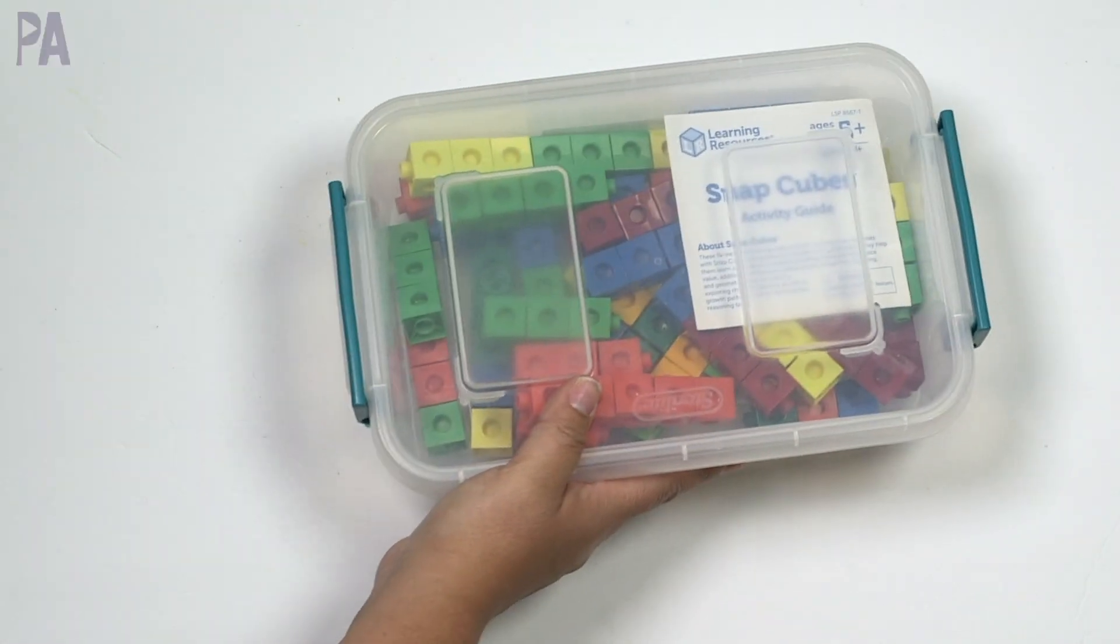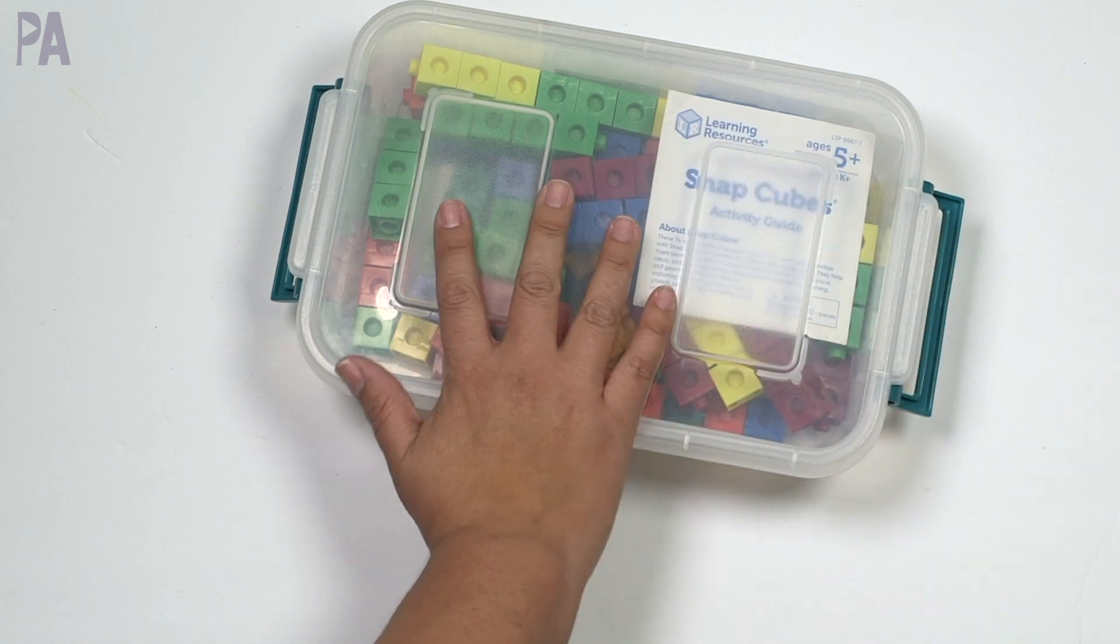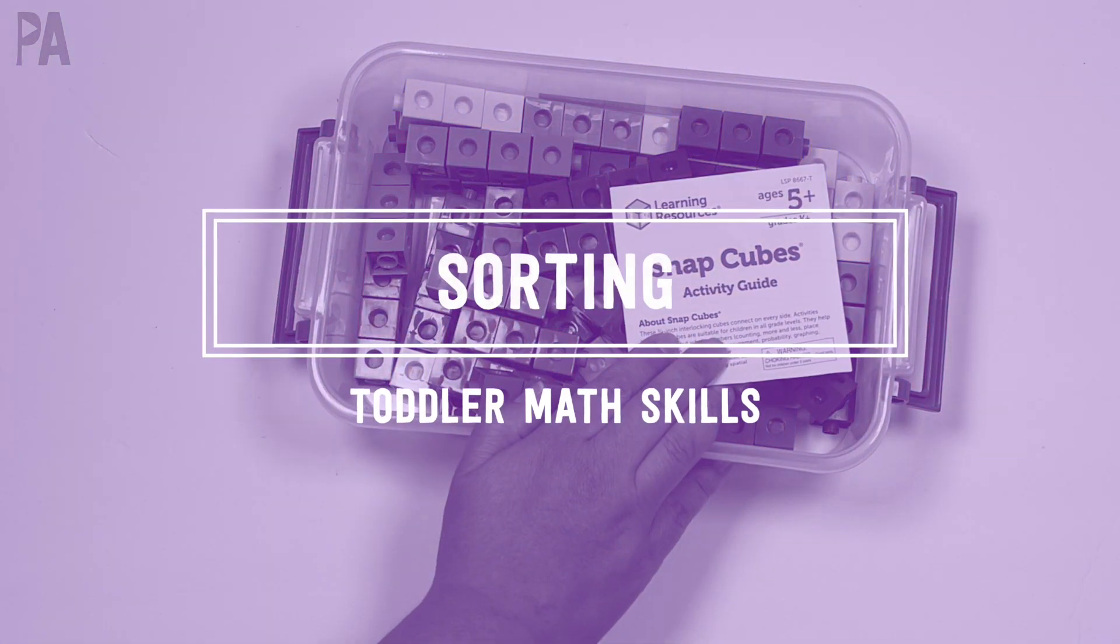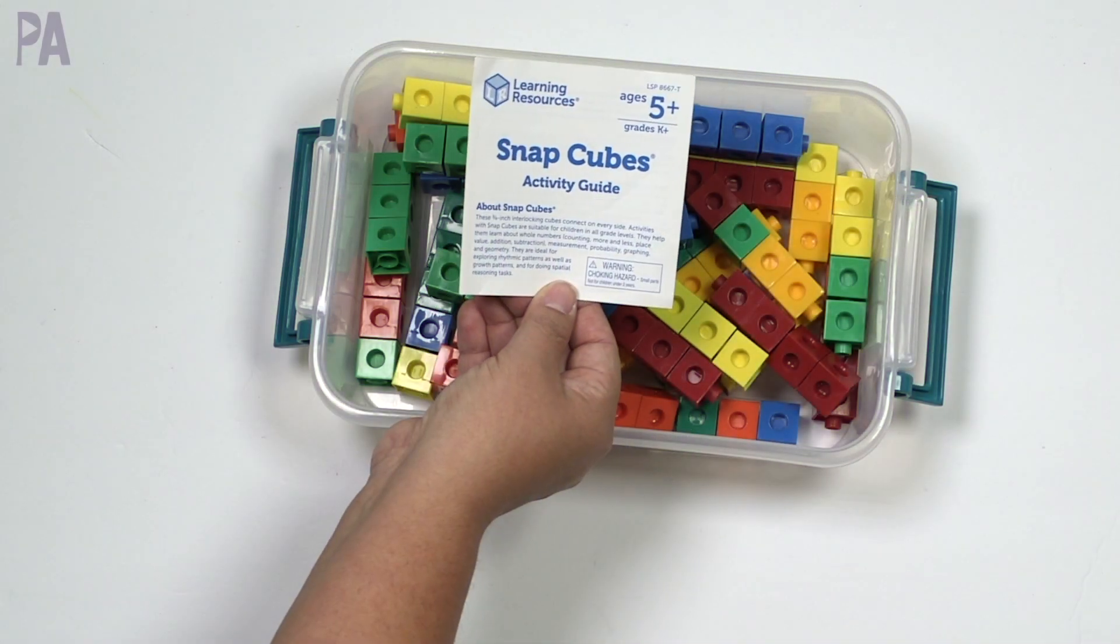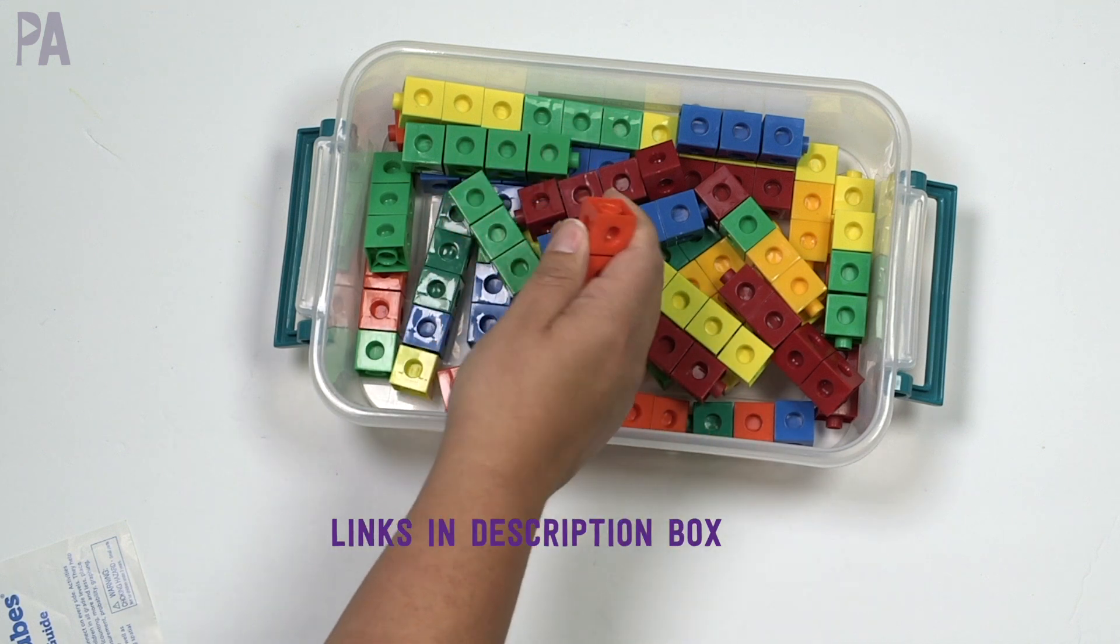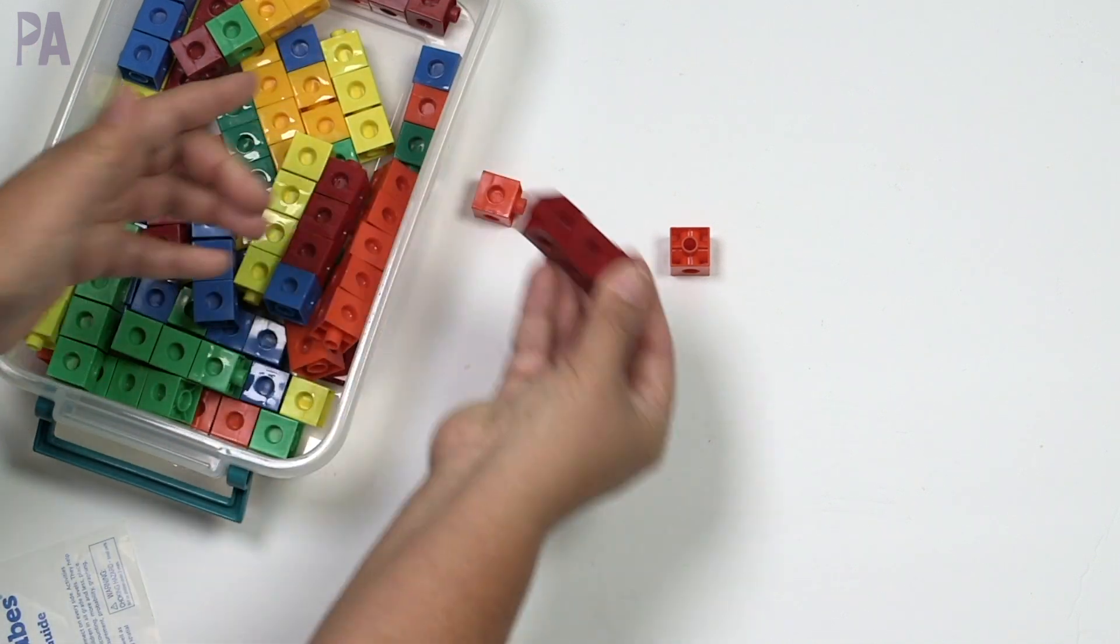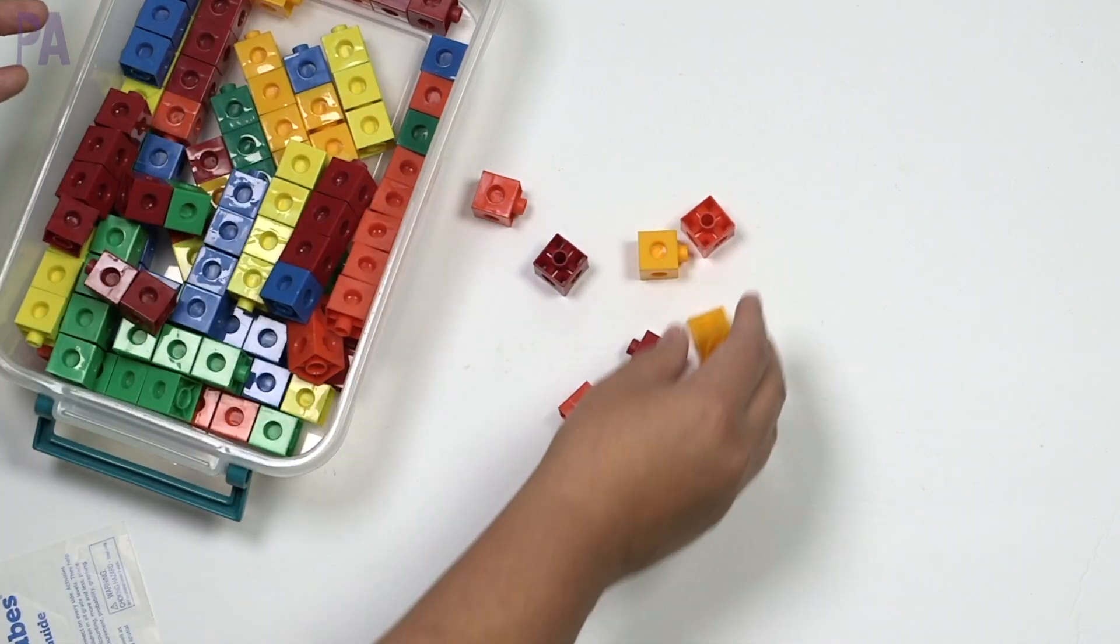I think what's great about toddler math is that you can do so many different things in so many different ways. It's a lot of fun and we're really focusing on all those pre-math skills, which are really early math skills. And the first one would be sorting. So many different ways to sort. I have pulled these snap cubes. They're from Learning Resources. Everything I mentioned I'm going to try and link down below. So these are math manipulatives and they snap together.